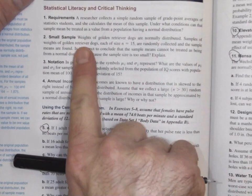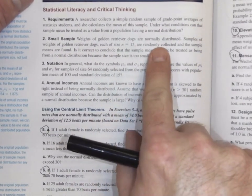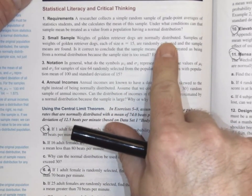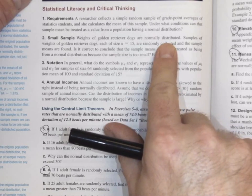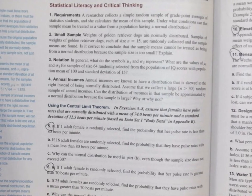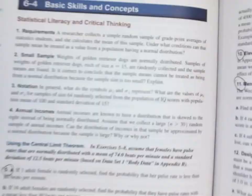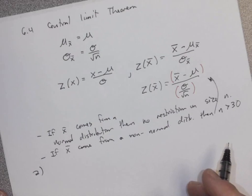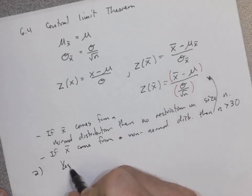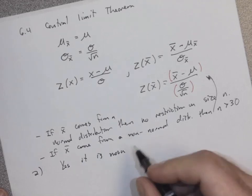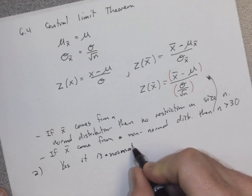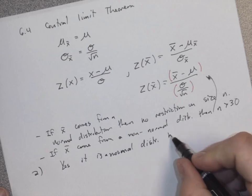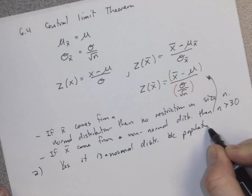Reading the question again: weights of golden retriever dogs are normally distributed. Since the population already has a normal distribution, the size of n does not matter. The distribution of the sample means will always be normal regardless of n. So yes, the sample means are normally distributed, because the population we're sampling from is normal.